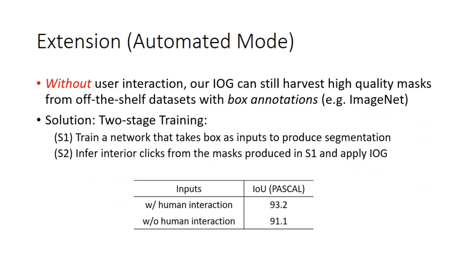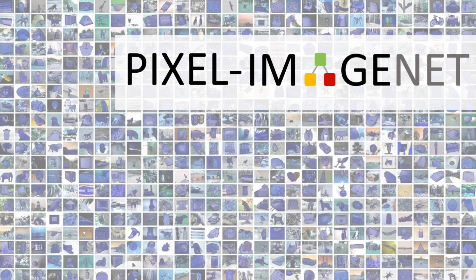Lastly, we also demonstrate an automated version of IOG, which allows us to harvest high-quality masks from large-scale datasets with bounding box annotations only, such as ImageNet, without additional user interaction. When applying to the ImageNet dataset, which consists of large numbers of bounding box annotations, we can collect pixel-level annotations, which we call PixelImageNet.